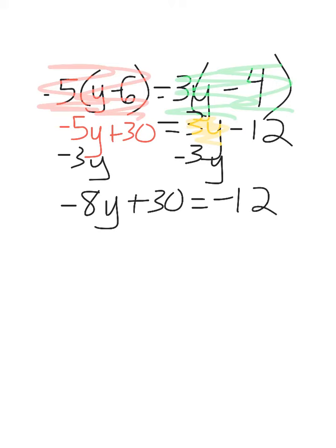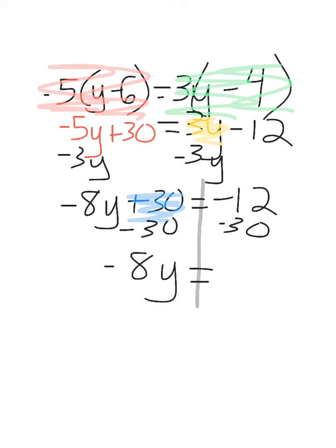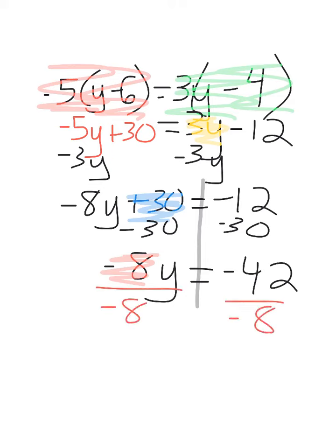Now I'm going to move my constant away from the y side. Negative 8 is attached to y, and I have positive 30. Since that is positive, I will subtract it. So I have negative 8y equals negative 42. Finally, I will divide by my coefficient of negative 8 on each side, and I end up with y equals positive 42 over 8.